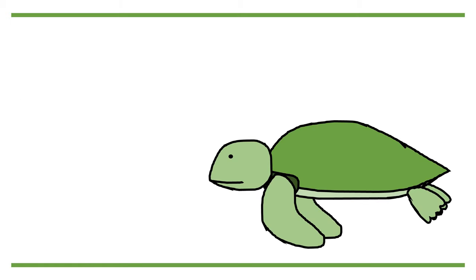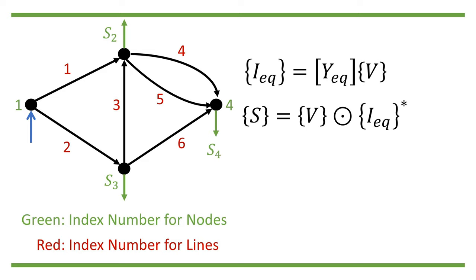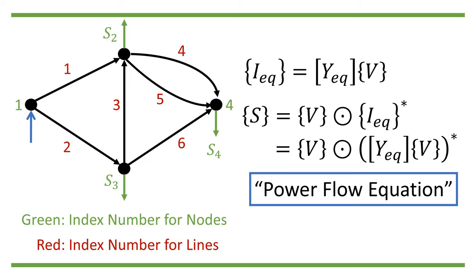As in our previous single-load example, it is usually more common that power consumption on each node are known, and we need to determine the voltage at each node accordingly. We can therefore write the electric power law of each node in compact form: S equals V entry-wise dot I_eq star equals V entry-wise dot Y_eq star V star, where S is the complex power consumption or injection at each node. This is the power flow equation,